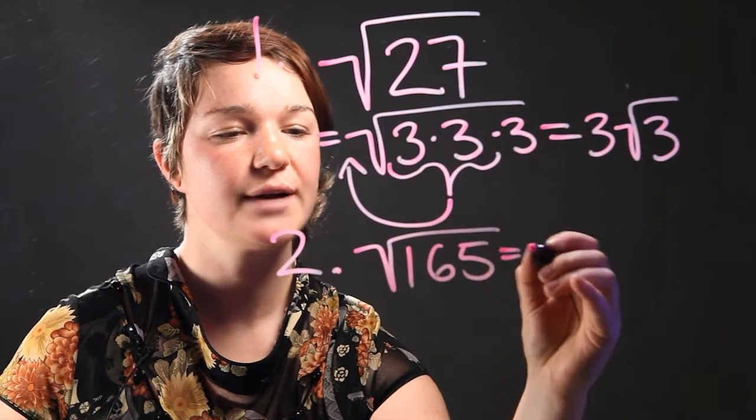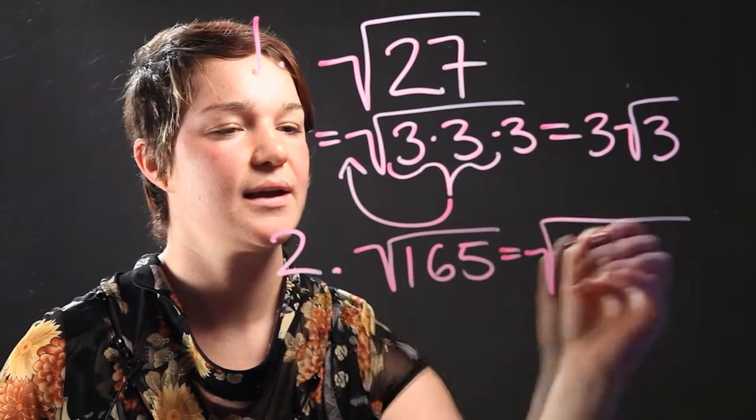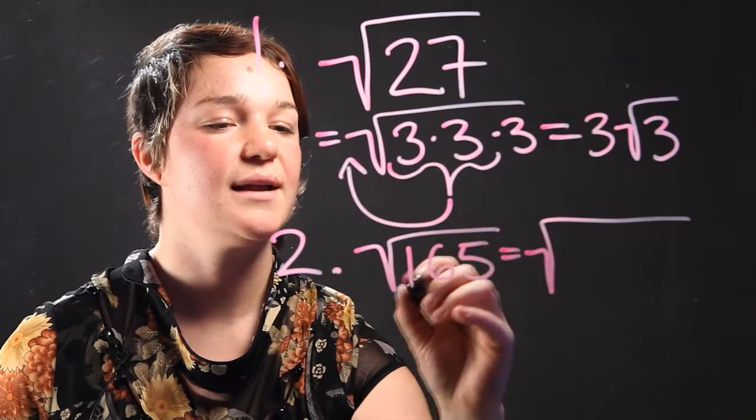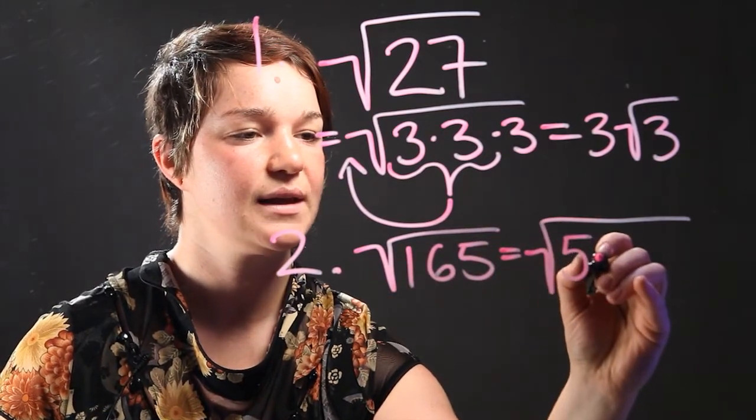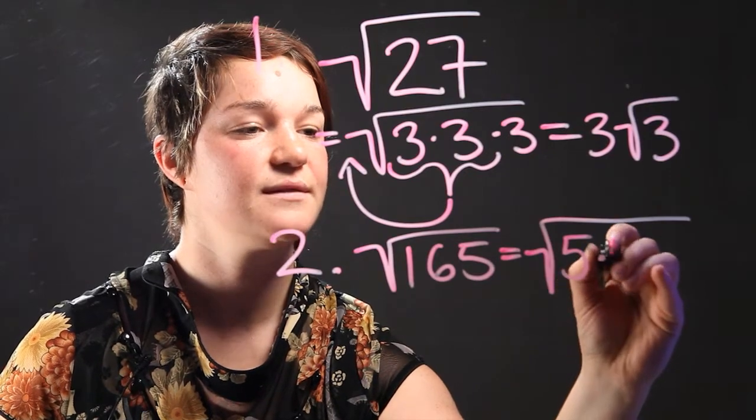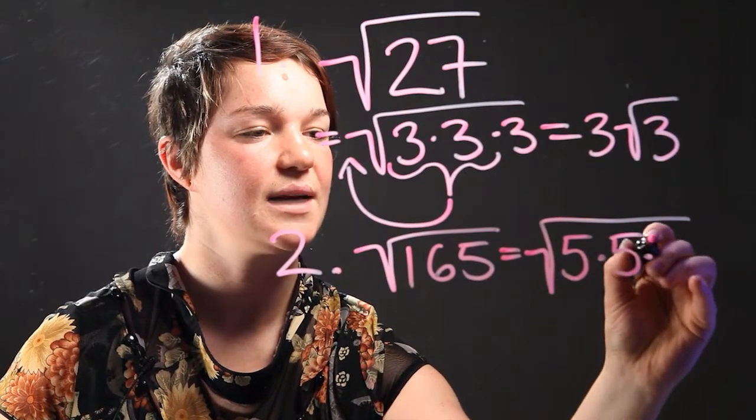So get out your calculator or your brain and remember that 165 divided by 5 is going to be 5 times 5 times 7.